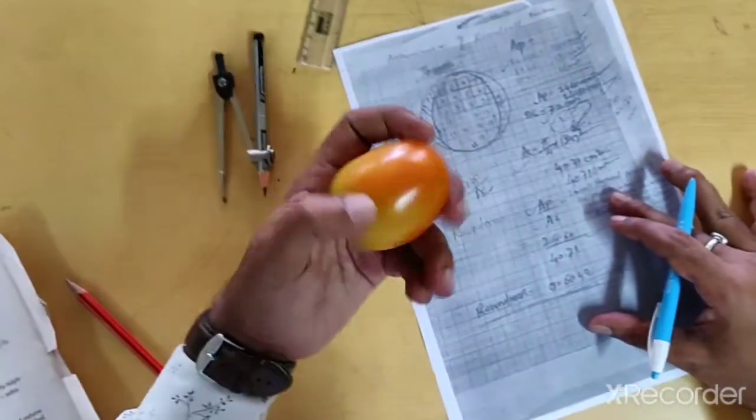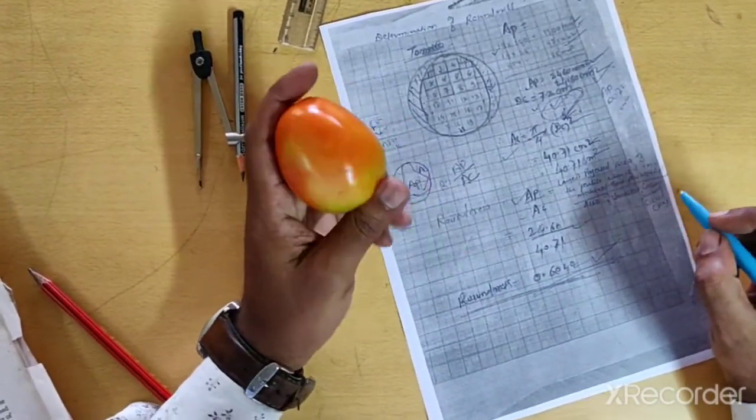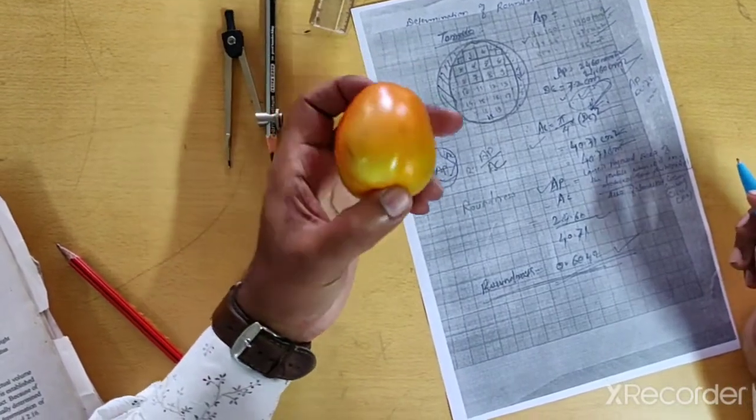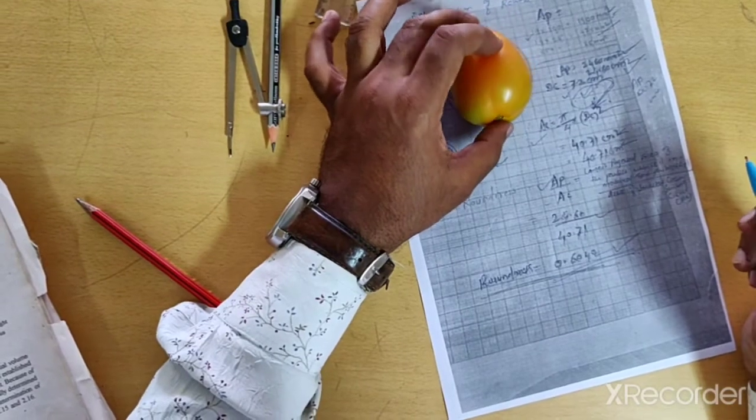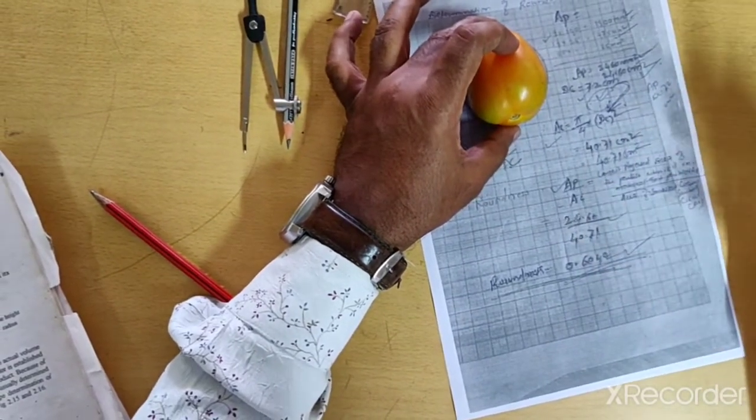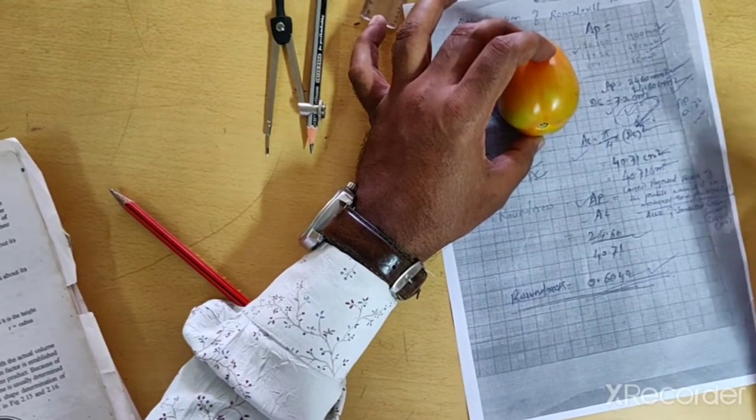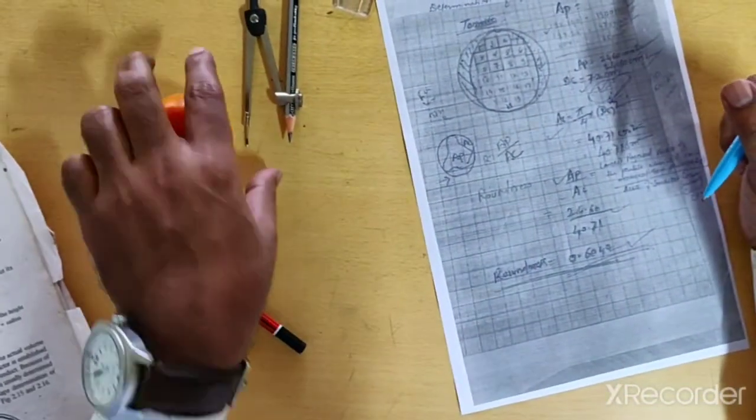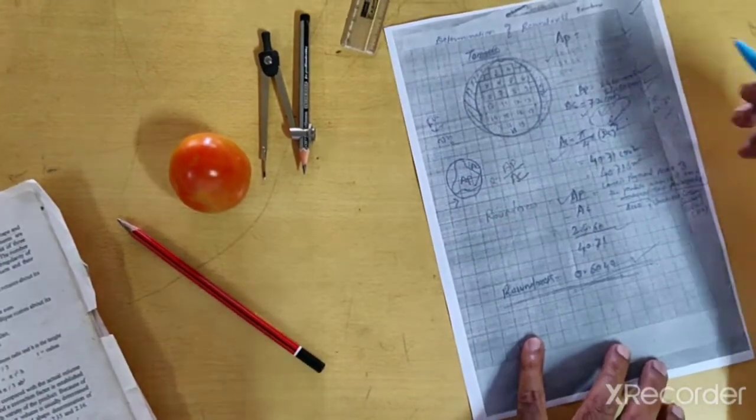The value of roundness will be based on the size of the fruit, size of the vegetable. Because this size will determine the number of squares enclosed by that particular vegetable or fruit. According to that, we will get the values of AP, DC and AC. So in this way, we have to measure or determine the roundness of tomato. Thank you.